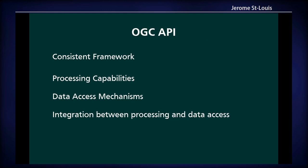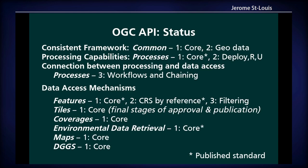So with OGCAPI, it's a family of standards — some approved, some still draft specifications — trying to be a consistent framework that's better integrated. There are processing capabilities and data access mechanisms. With workflows and chaining, Part 3 of Processes is trying to better connect the data access with the processing capabilities. The consistent framework is provided by OGCAPI Common Part 1 Core and Part 2 Geospatial Data, which is the foundation for several of the other OGCAPIs.